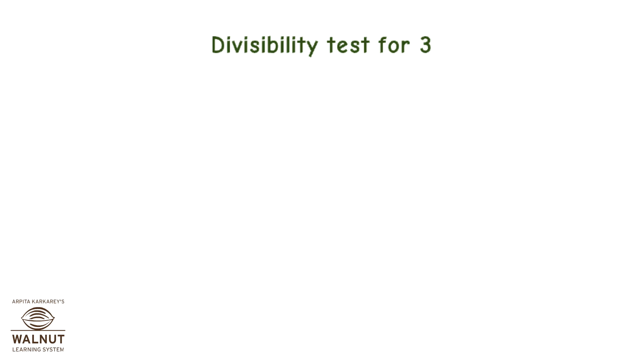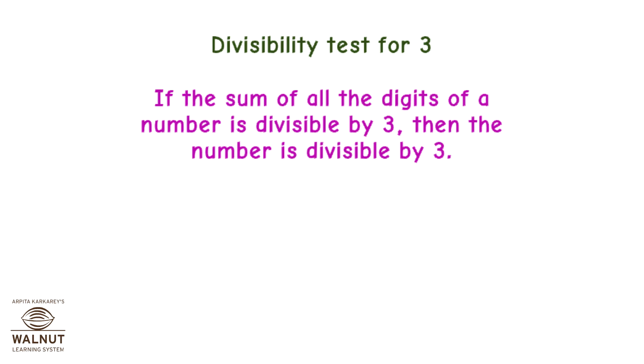Divisibility test for 3: if the sum of all the digits of a number is divisible by 3, then the number is divisible by 3.